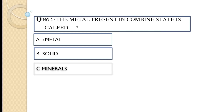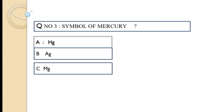Question number two: the metal present in combined state is called — option A: metal, option B: solid, option C: minerals. The correct answer is option C, minerals.